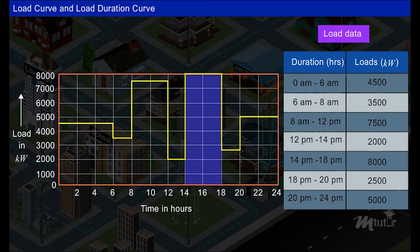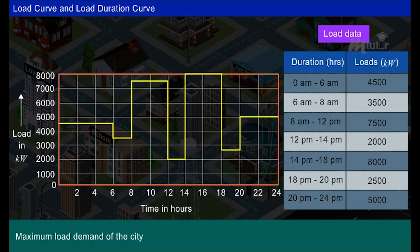The peak load on the day indicated by the load curve represents the maximum demand on the power station. Here, the maximum load demand of the city is equal to 8000 kilowatt.